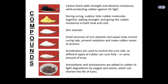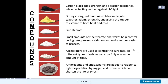Carbon black adds strength and abrasion resistance while protecting rubber against ultraviolet light. During curing, sulphur links rubber molecules together, adding strength and giving the rubber resistance to both heat and cold. Zinc stearate — a small amount of zinc stearate and waxes helps control curing rate, prevent oxidation, and makes rubber easier to process. Accelerators are used to control the cure rate so different types of rubber can cure fully in the same amount of time. Antioxidants and anti-ozonants are added to rubber to fight degradation by oxygen and ozone, which can shorten the life of tyres.